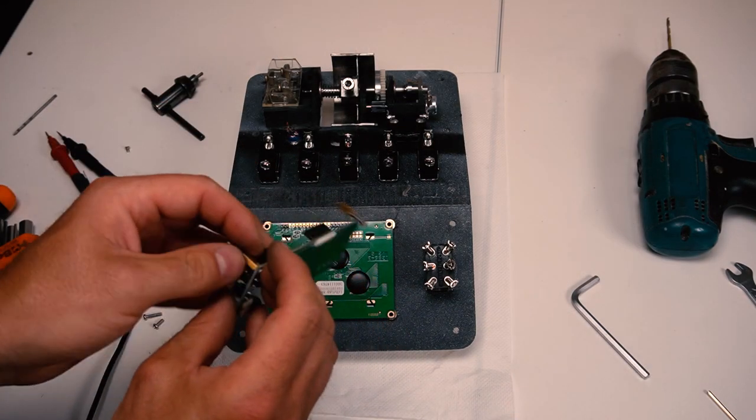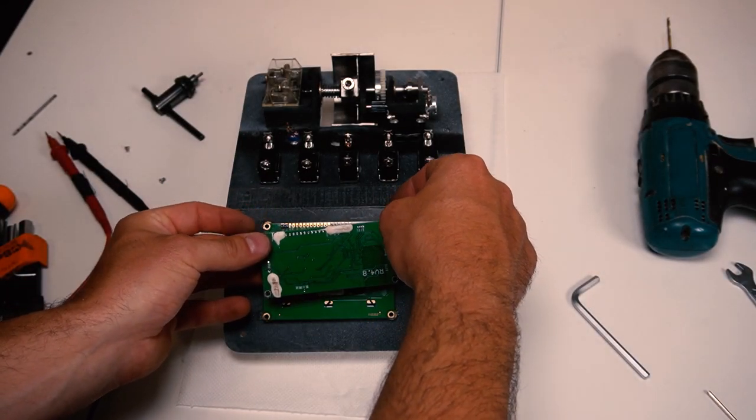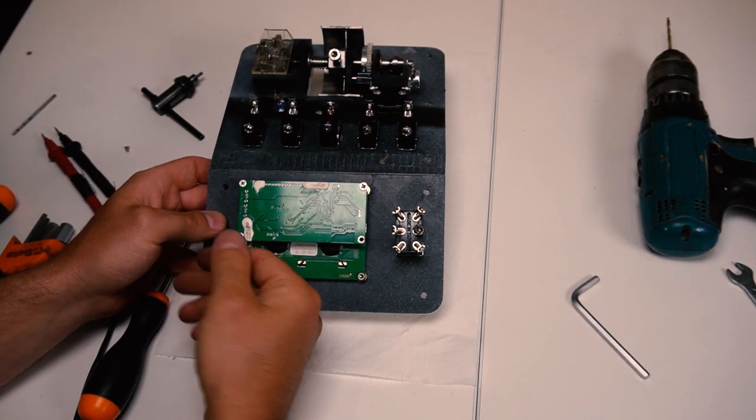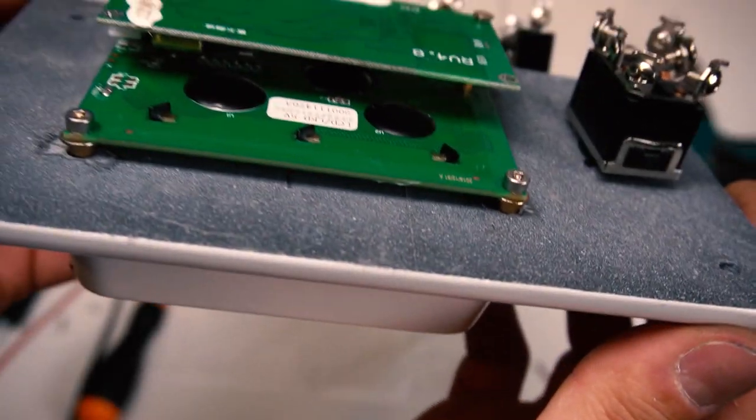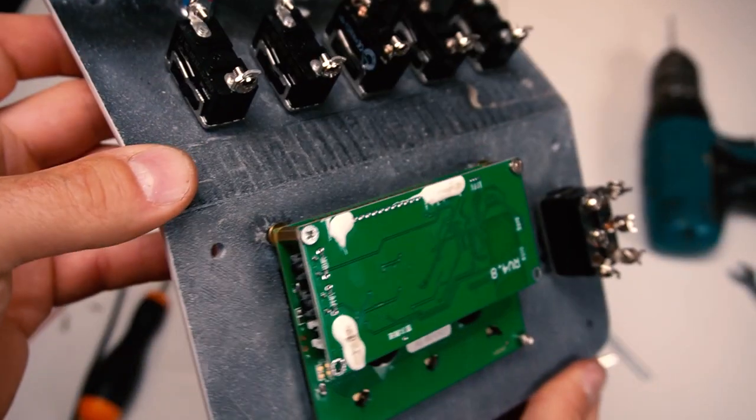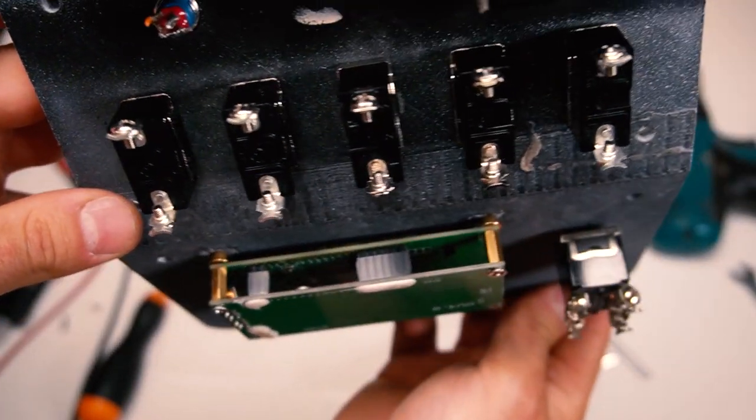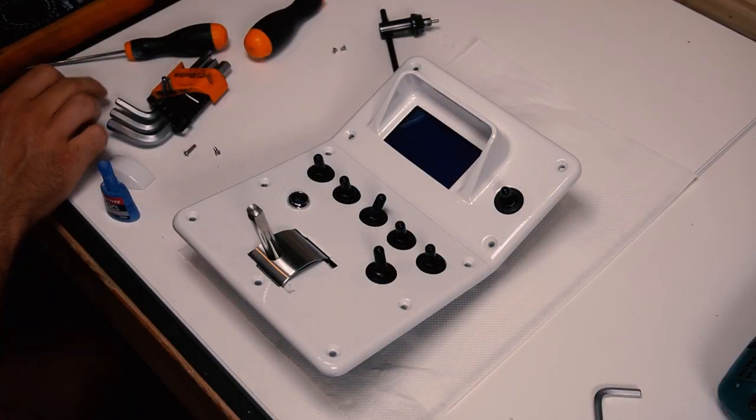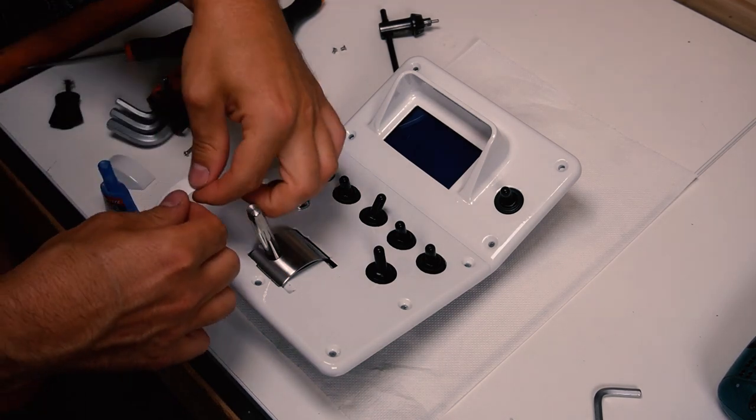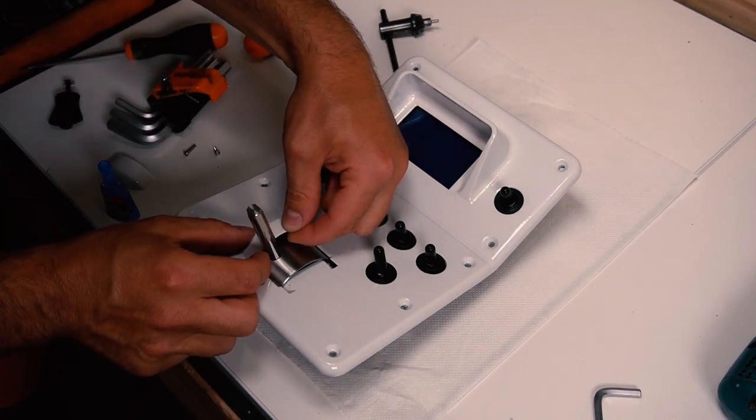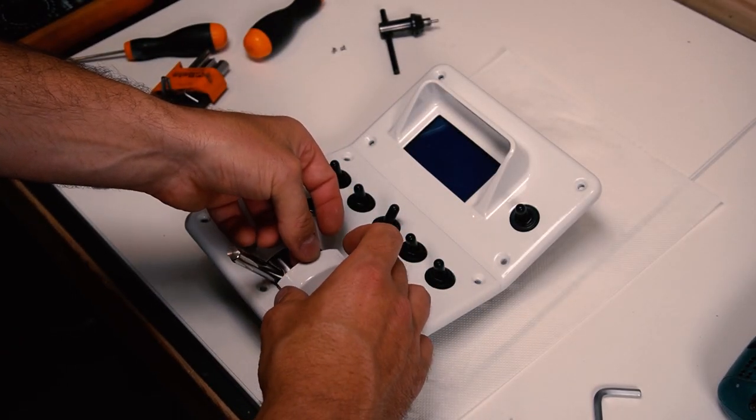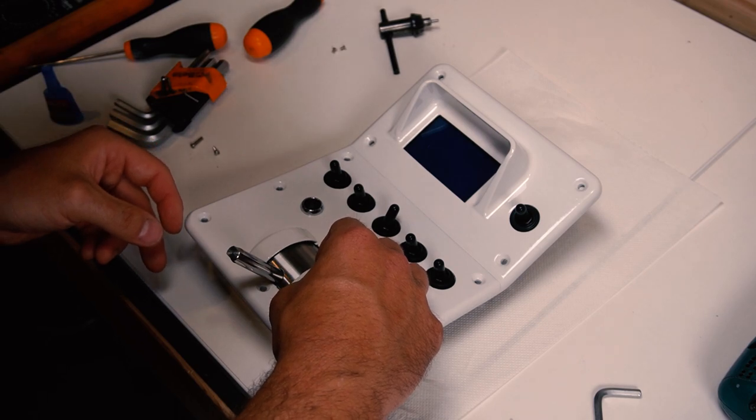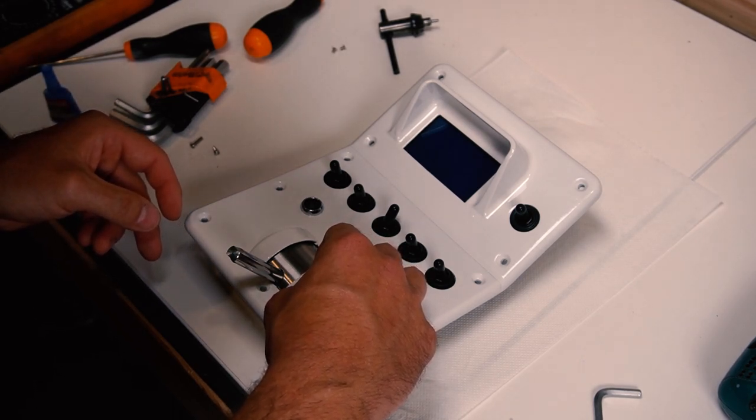Mounting some final pieces of the electronics. And now I just need to glue these protective covers for the throttle handle. This leaves just one more thing to do to finish this control panel.